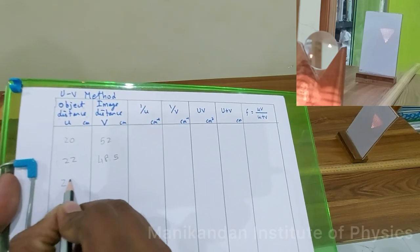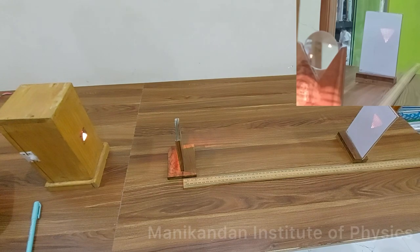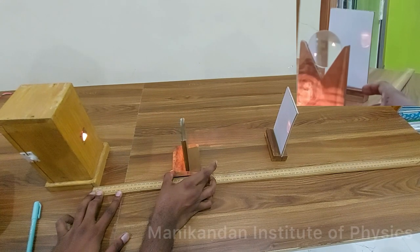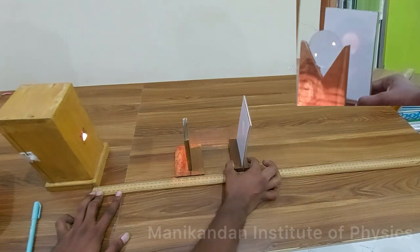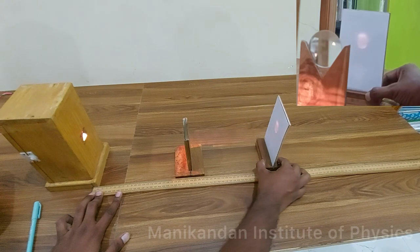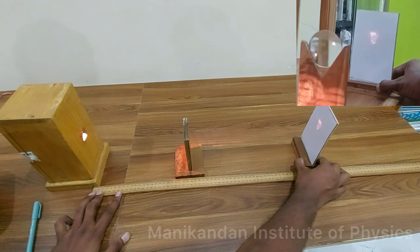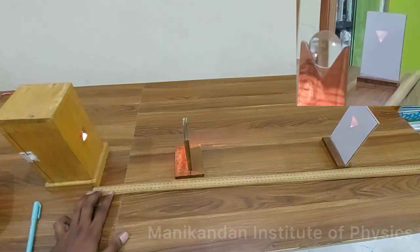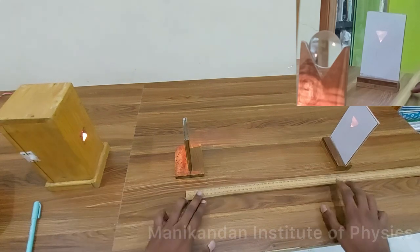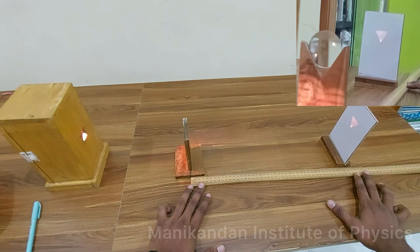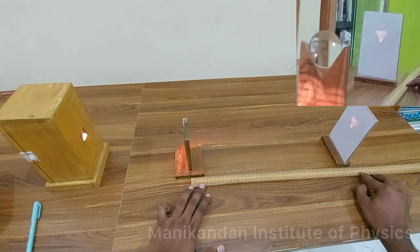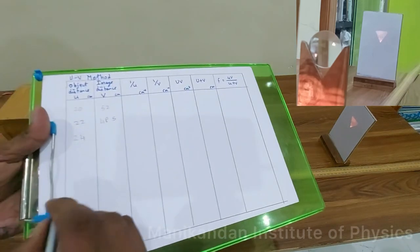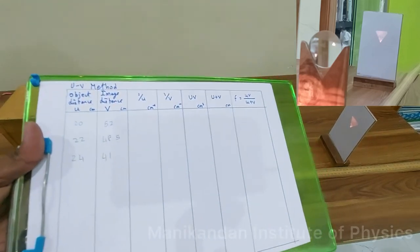Now I increase u to 24 centimeters, moving the object 2 centimeters further from the source. I then move the screen away from the lens until a clear image forms on the screen. Measuring the distance from the lens to the screen gives approximately v = 41 centimeters.